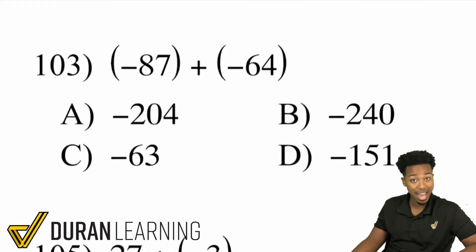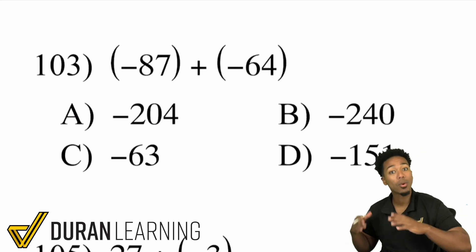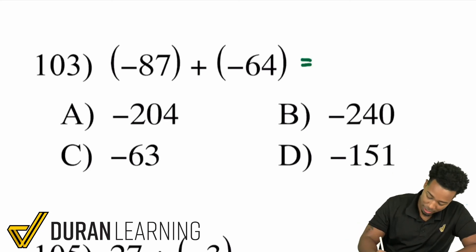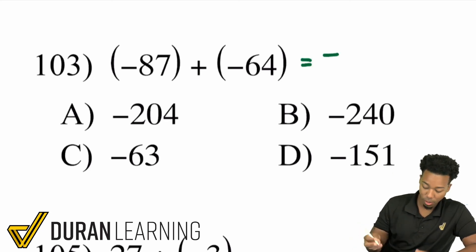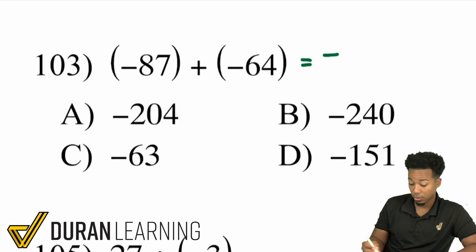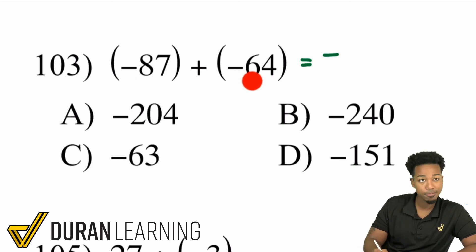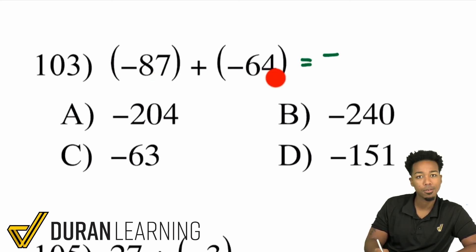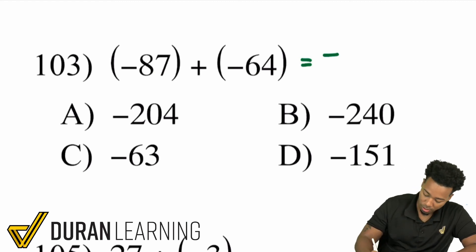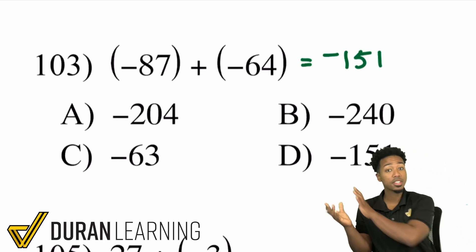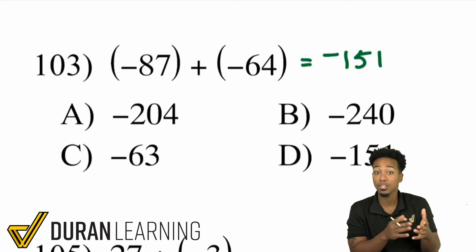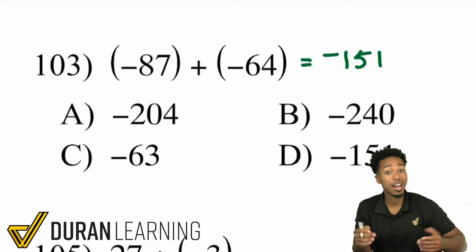You have a negative and a negative being added — you're getting more negative. So add the numbers and keep the result negative. 87 plus 64: mentally, 80 plus 60 is 140, plus 7 is 147, plus 4 is 151. So the answer is negative 151. You have to make sure you know your basic mental math with addition and subtraction to really dominate this.